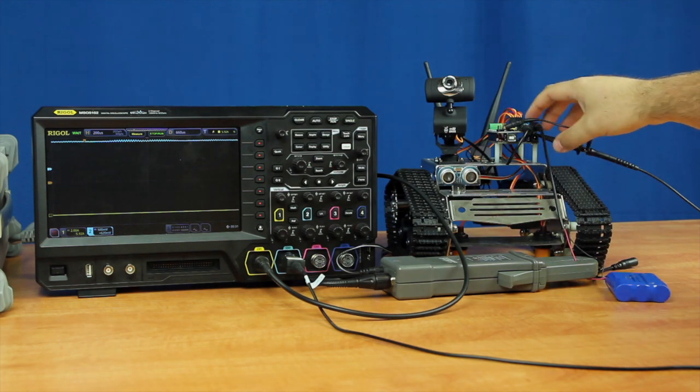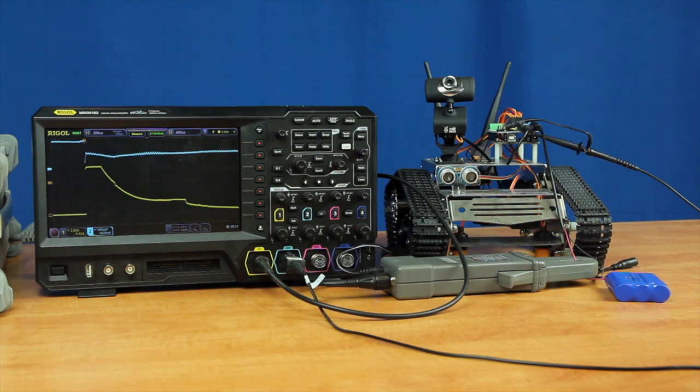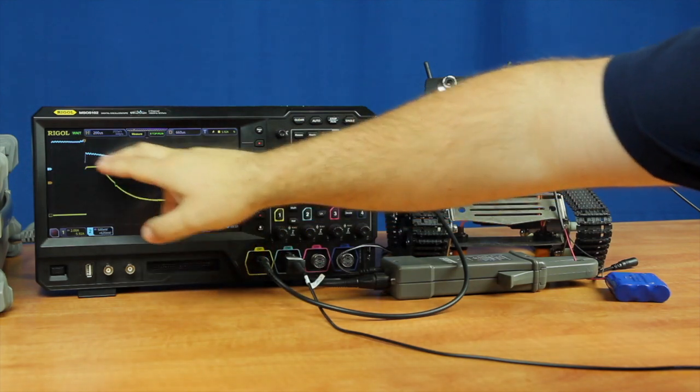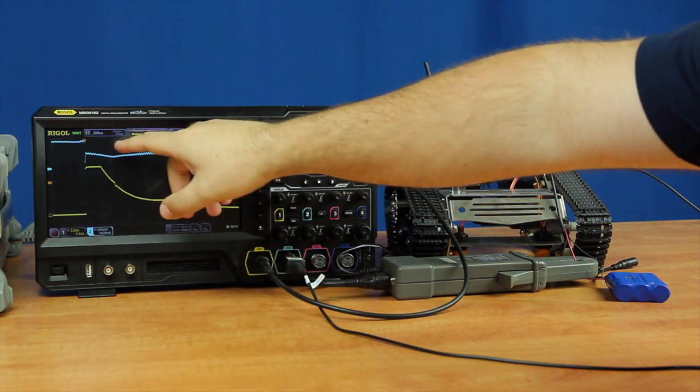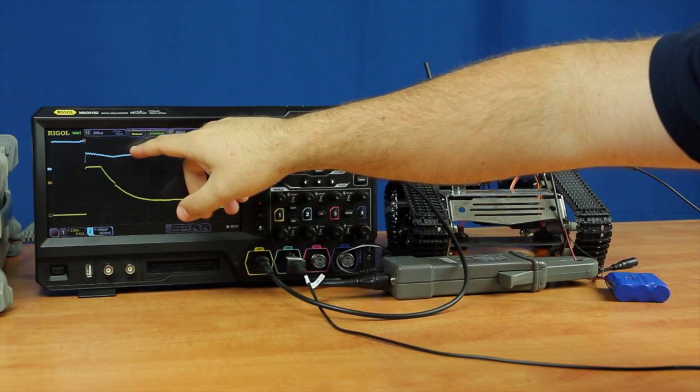So when I now press down on the switch, we'll see our boot up energy draw as this spike in yellow which is going to be our amperage. And then this blue line where it drops is going to be our voltage.